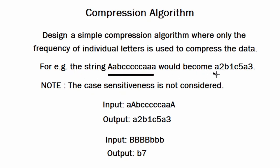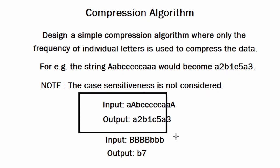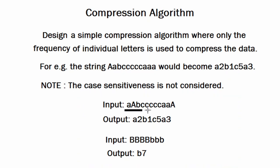For example, this string would become this. Case sensitivity is not considered, meaning uppercase and lowercase are treated the same. In the sample input, A appears two times so it becomes A2, B appears once so it becomes B1, C appears 5 times so it becomes C5, and then A appears three more times so it becomes A3.